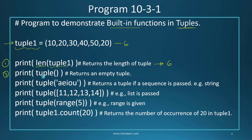The second print statement calls the built-in function tuple() without any argument. In this case it will return an empty tuple — a tuple without any value inside it.